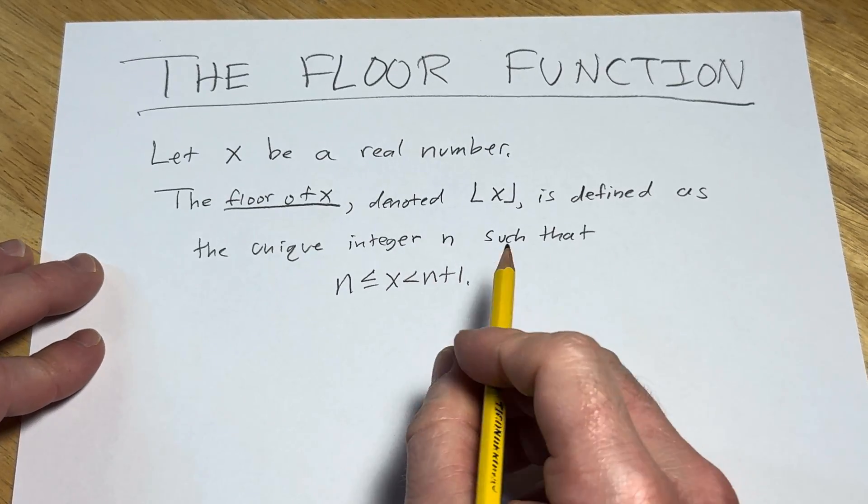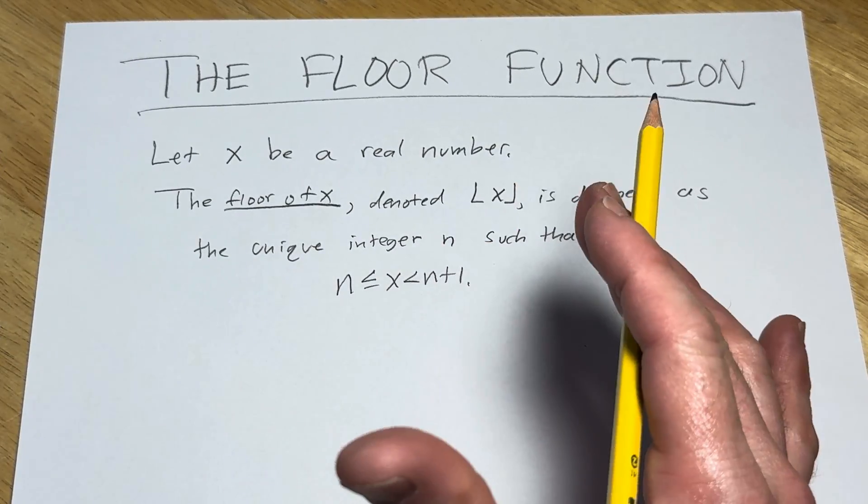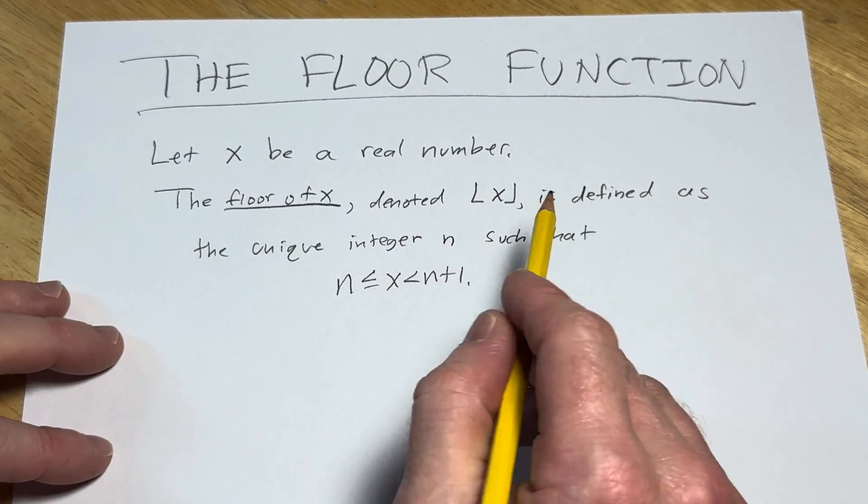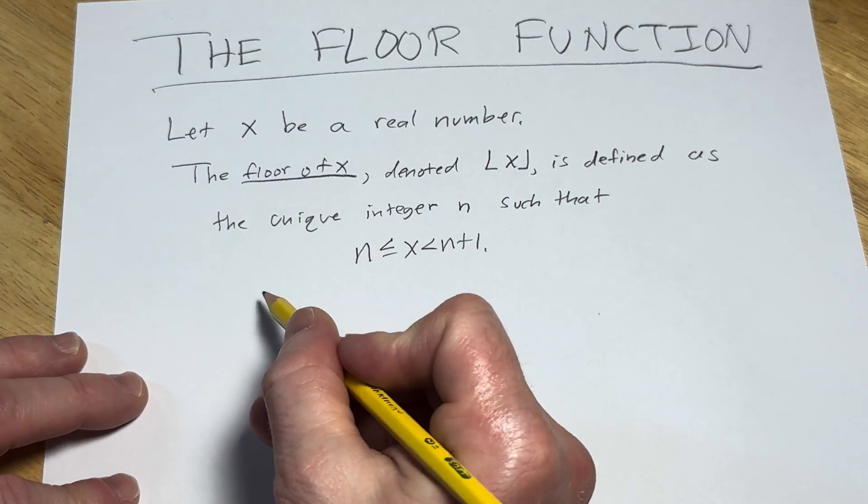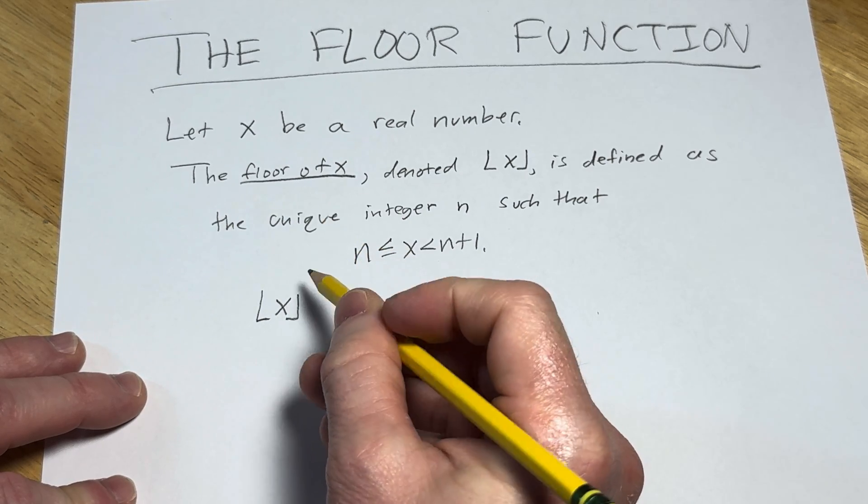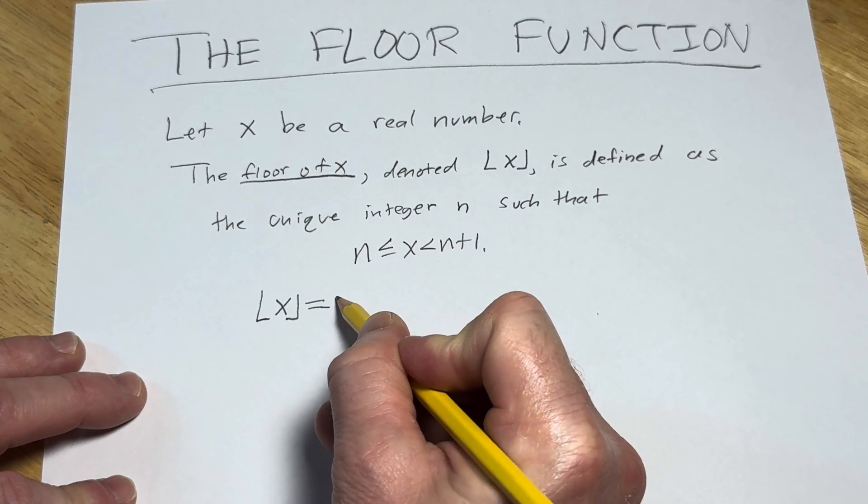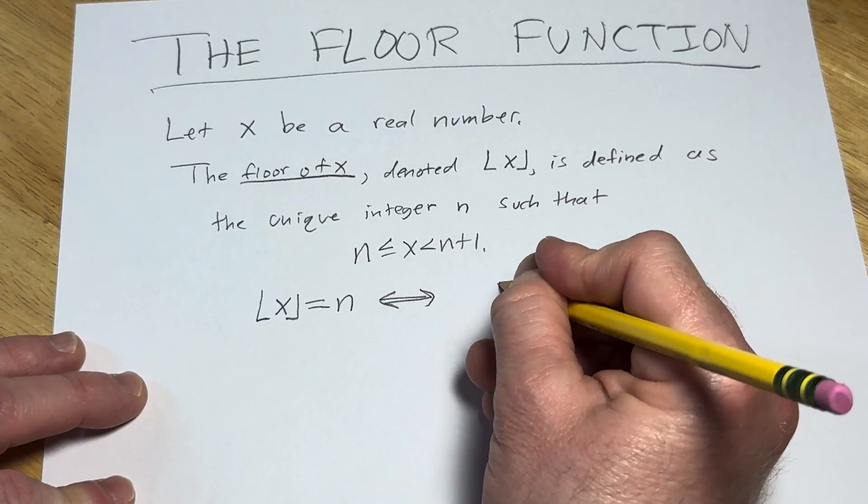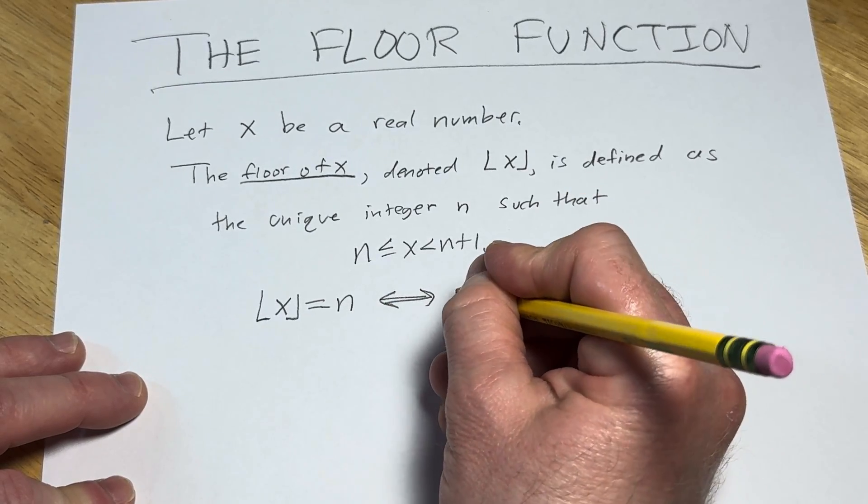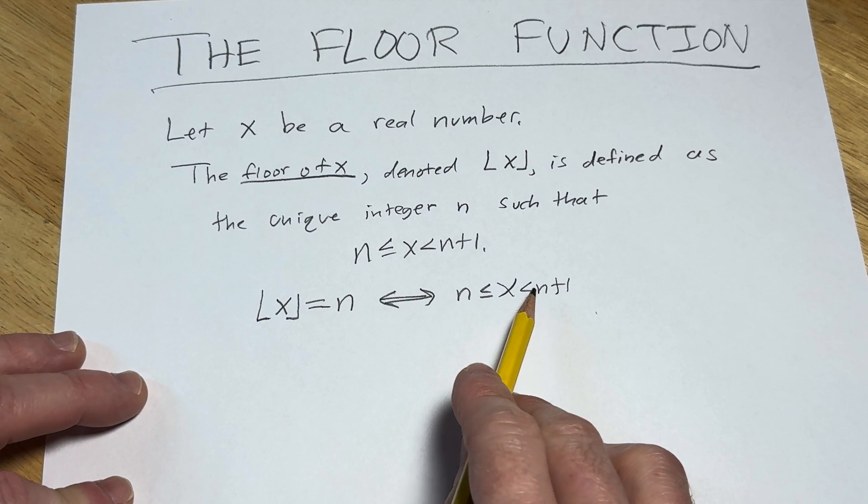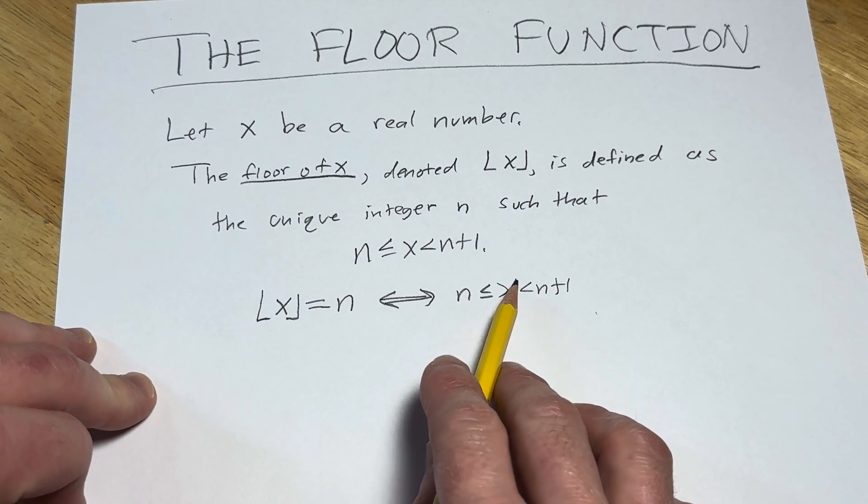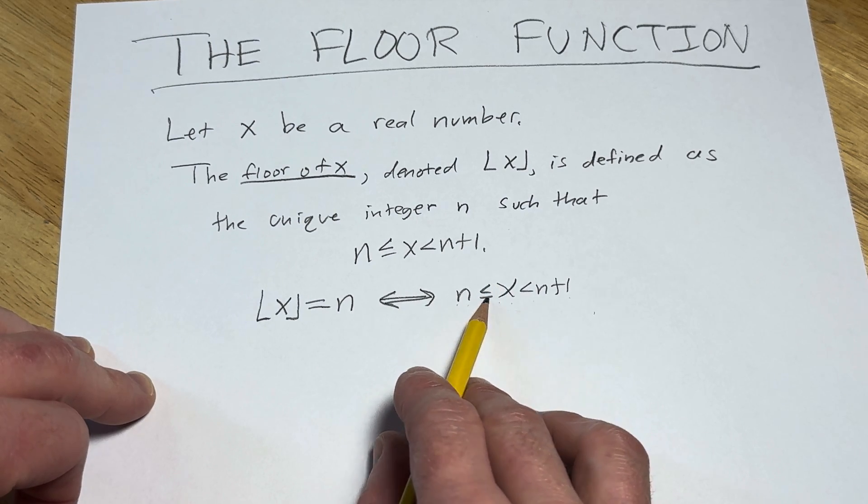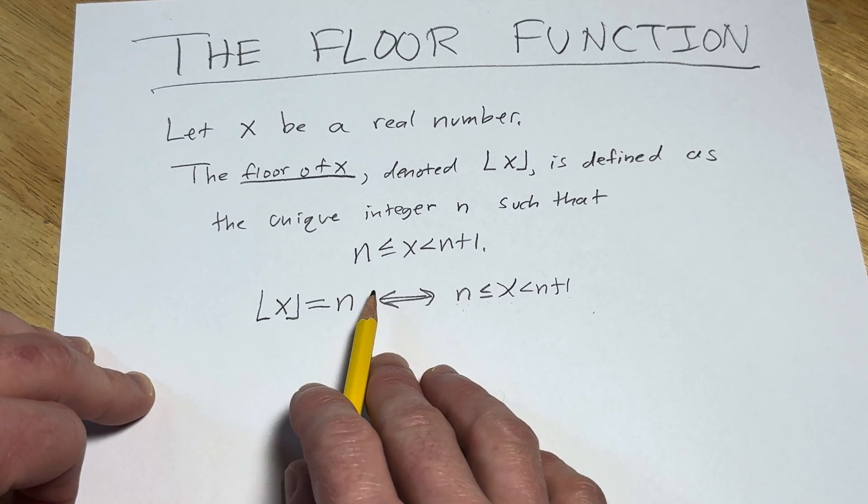I think when most people see this, they're like whoa, what is going on? It scares people. Let me write it another way. Basically, if the floor of x is equal to n, this is equivalent to saying that n ≤ x < n+1. So this is a compound inequality. That's the floor function.